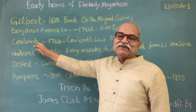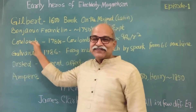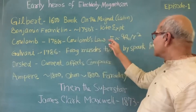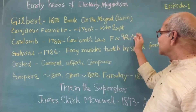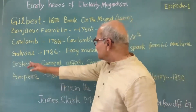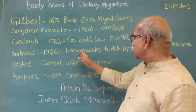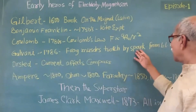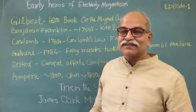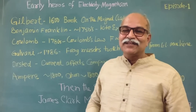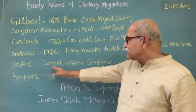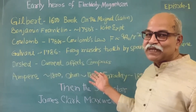Then there is Coulomb. Coulomb's law — everyone knows what Coulomb's law is: the force between two charges separated by distance r is proportional to q1 times q2 divided by r squared. This was also around the middle 18th century. Then Galvani, around 1786, did experiments with frog muscles, switching them using sparks from electrostatic machines that had been developed by that time. Then Oersted — a very respected name — he connects electricity to magnetism through his experiments.